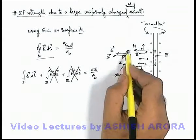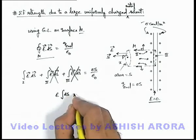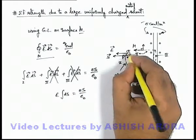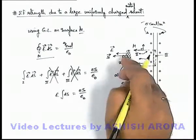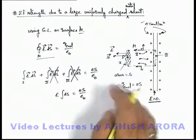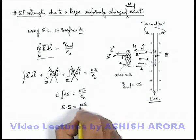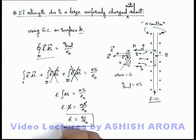And for the face 1, as E is uniform we can write E integration of dS is sigma S by epsilon not. And for this surface which is parallel to the sheet and point P is also lying on it, the total area S, it can be written as E·S is sigma S by epsilon not. Here S gets cancelled out and the electric field can be written as sigma by epsilon not.